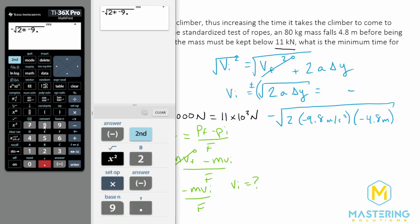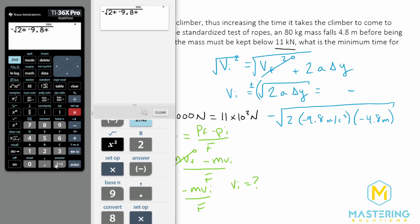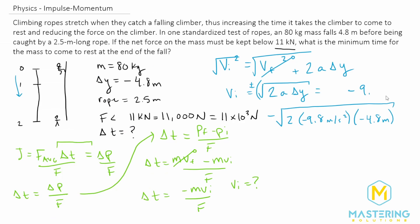This gives us a negative 9.7 meters per second for our initial velocity. So now that we have the initial velocity, we can just plug in everything into our equation that we already solved for down here.